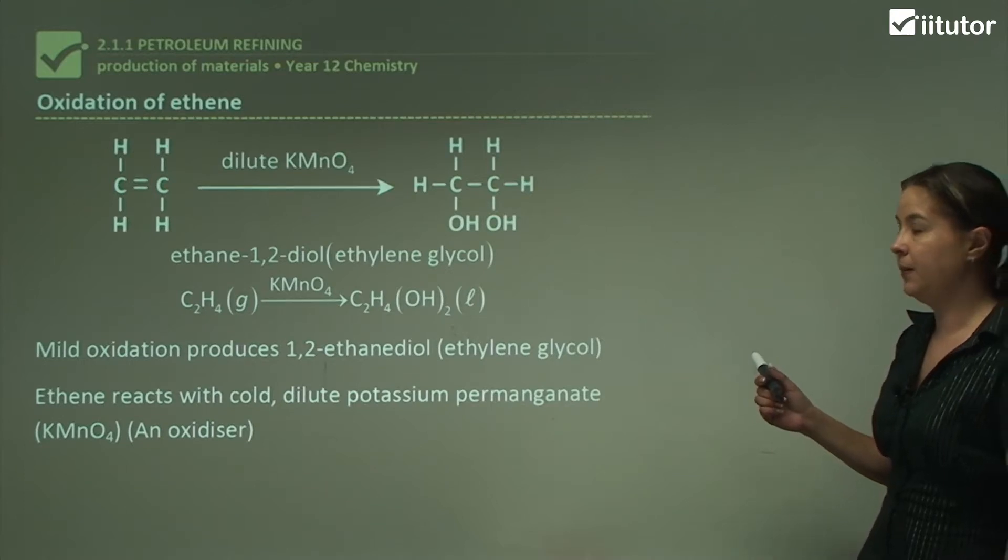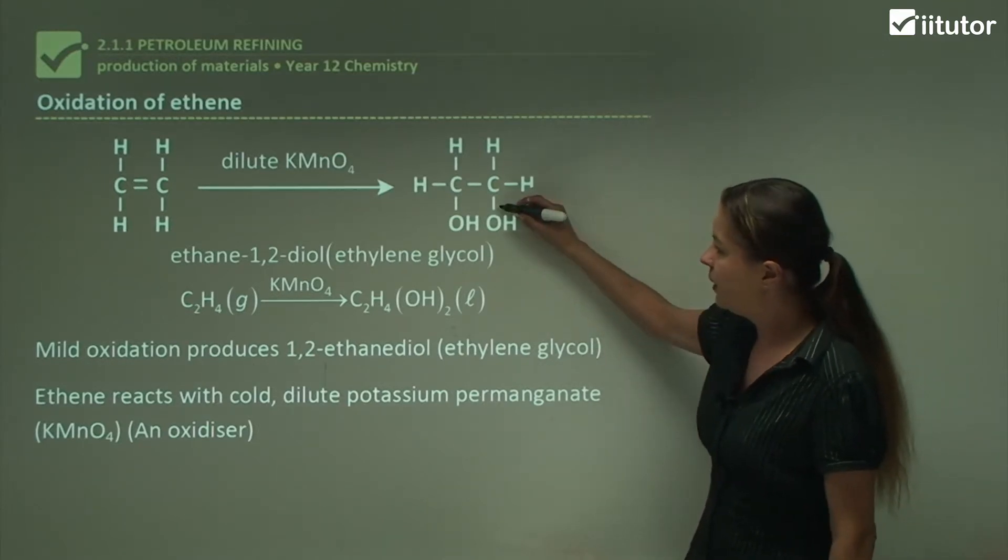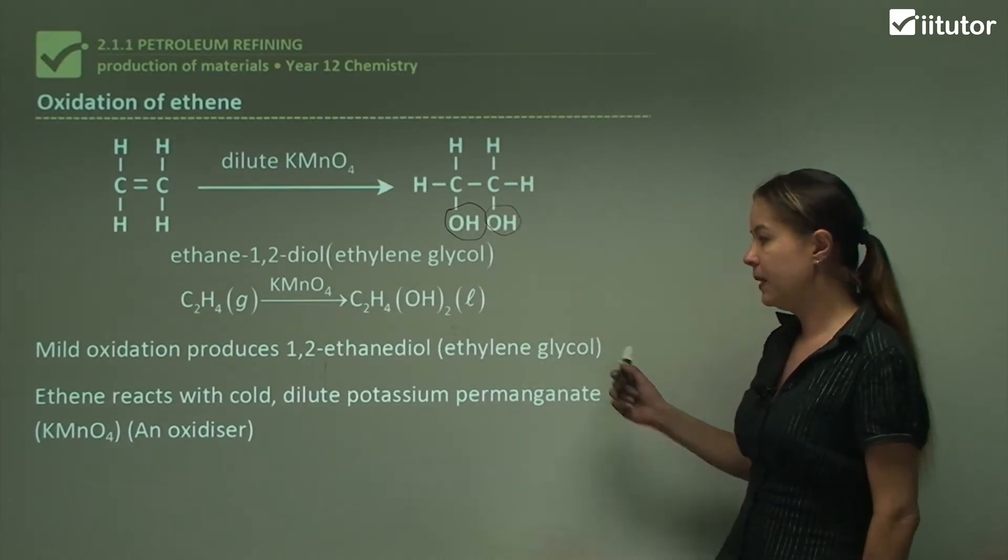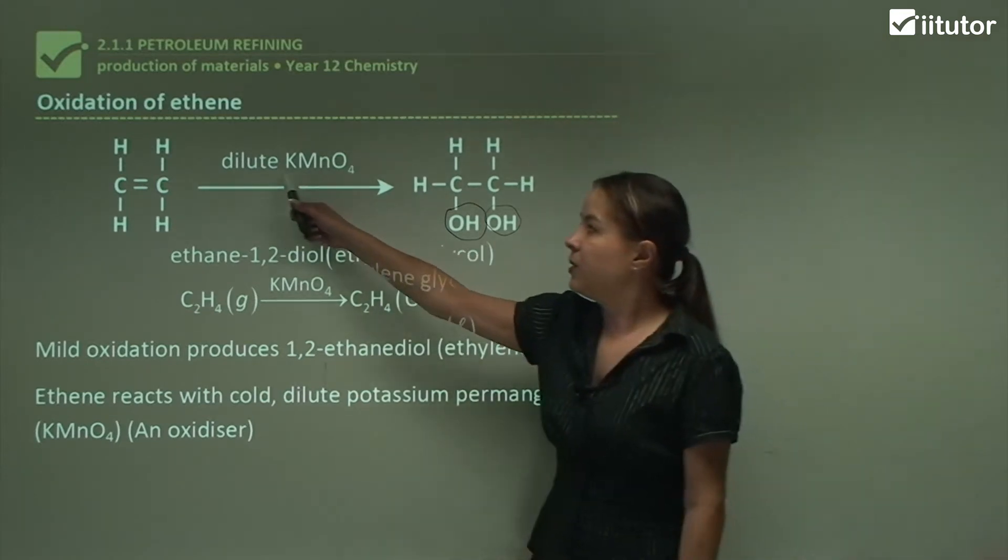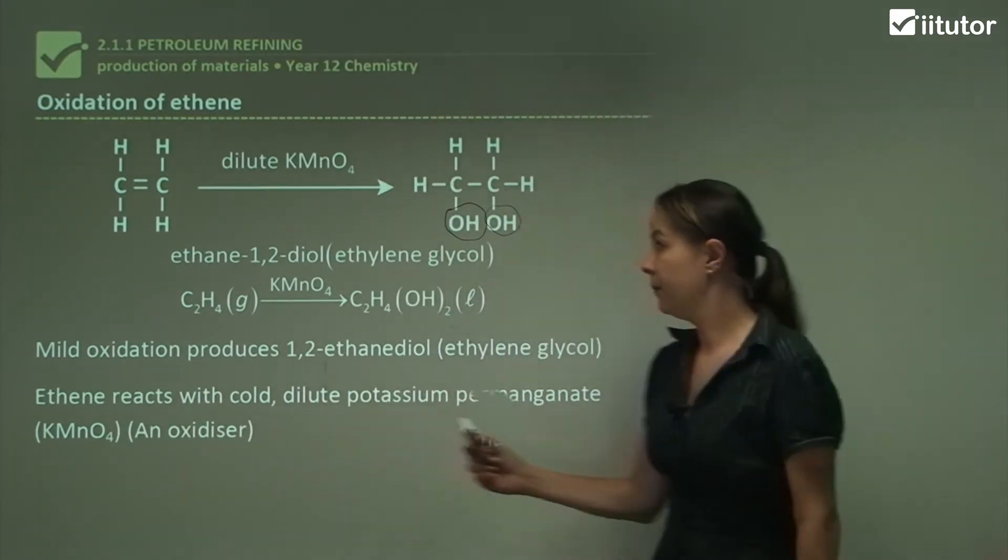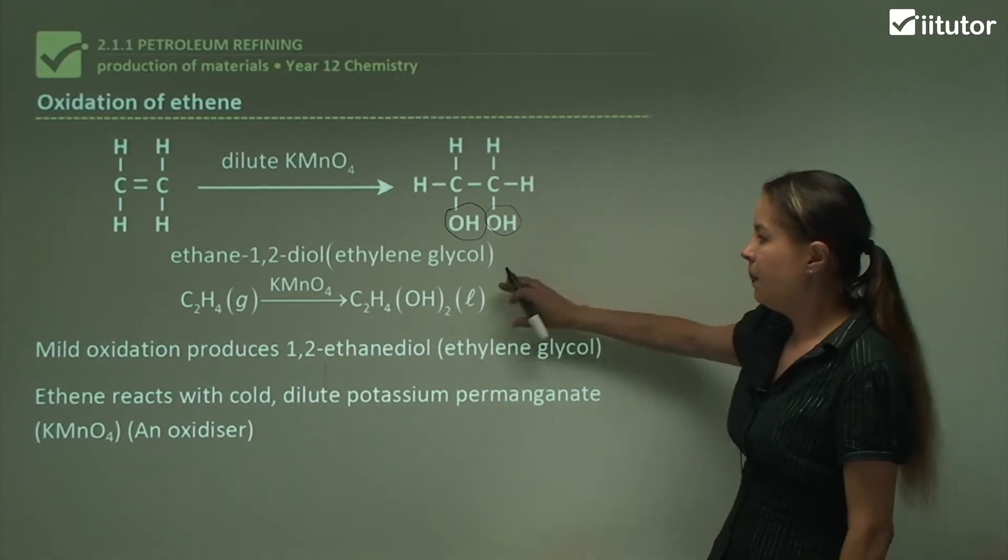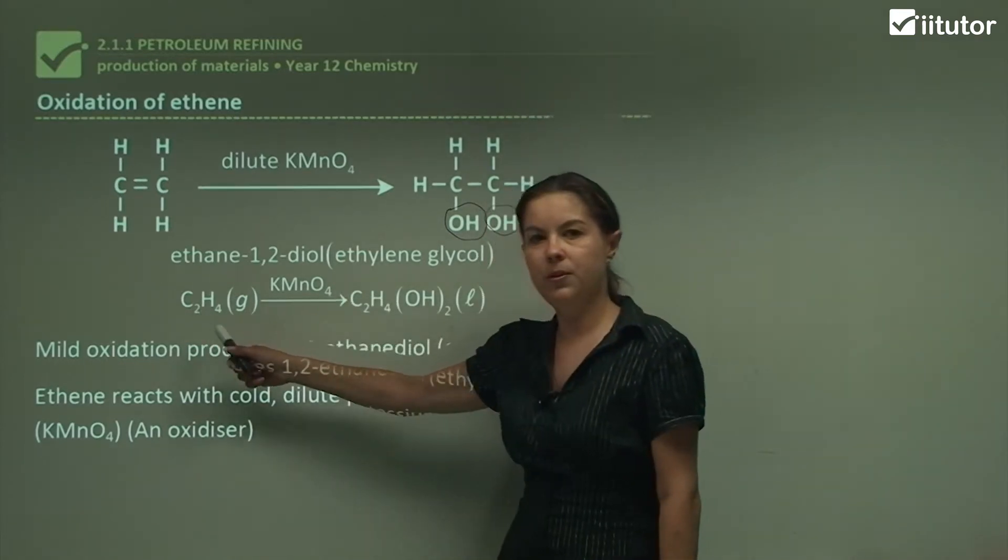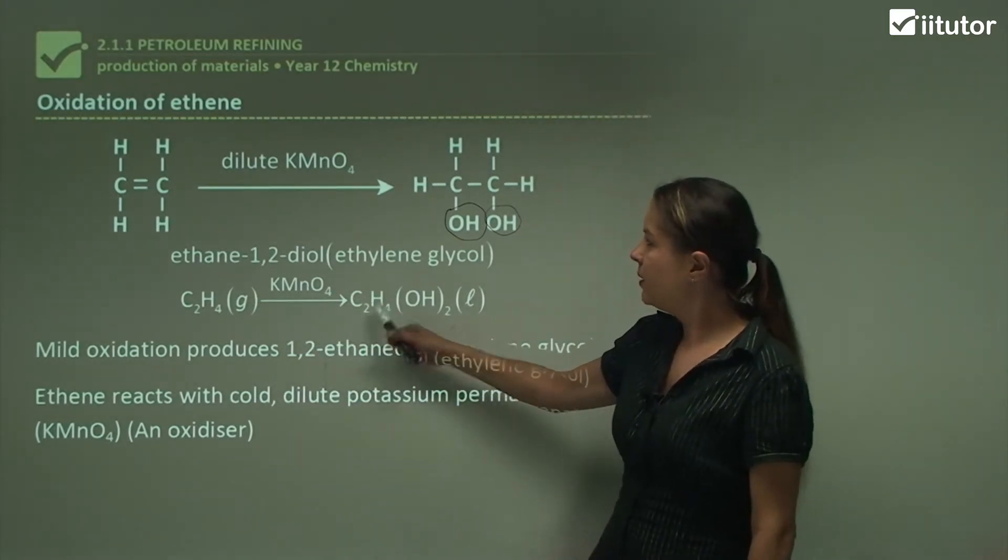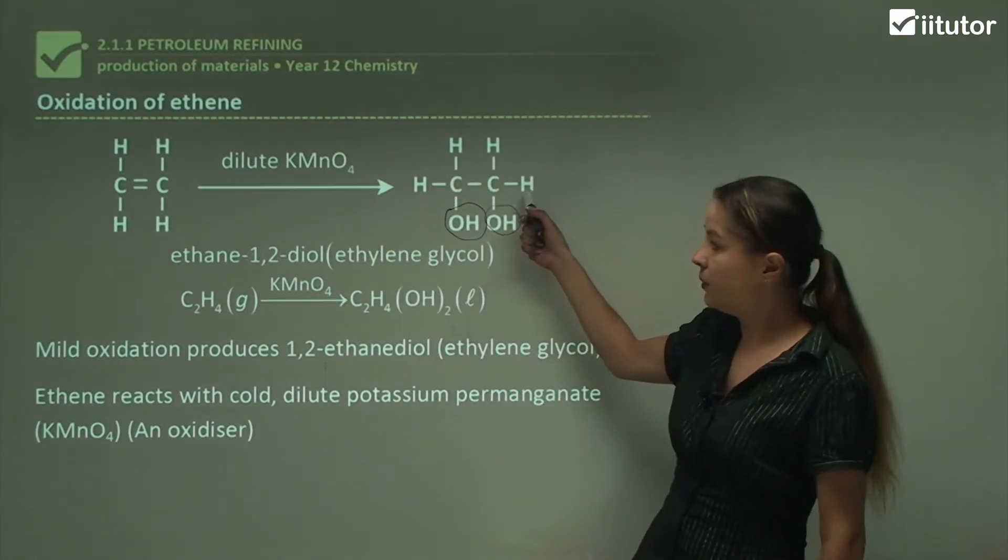Now on to oxidation of ethene. This is where we go from ethene to ethylene glycol. This is the structural formula for ethylene glycol, as you remember with the two alcohol groups. There's two different ways of oxidizing ethene, either with dilute potassium permanganate, KMnO4, which is an oxidizer. These are the structural formulae, which are good for you to see what's happening in the reaction. But to cut it down into shorthand, we can write C2H4 gas with KMnO4 goes to C2H4(OH)2, which is liquid ethylene glycol.